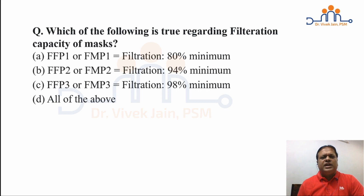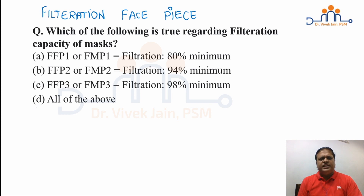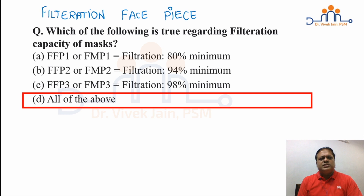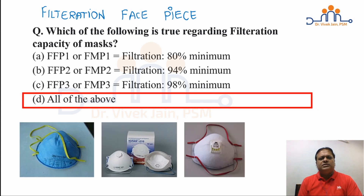Regarding filtration capacity of masks: FFP — Filtering Face Piece — is a classification given by the European Union, divided into three categories. FFP1 has a minimum filtration capacity of 80%, FFP2 has 94%, and FFP3 has 98%. The answer is all of the above, as there are three categories: FFP1, FFP2, and FFP3.